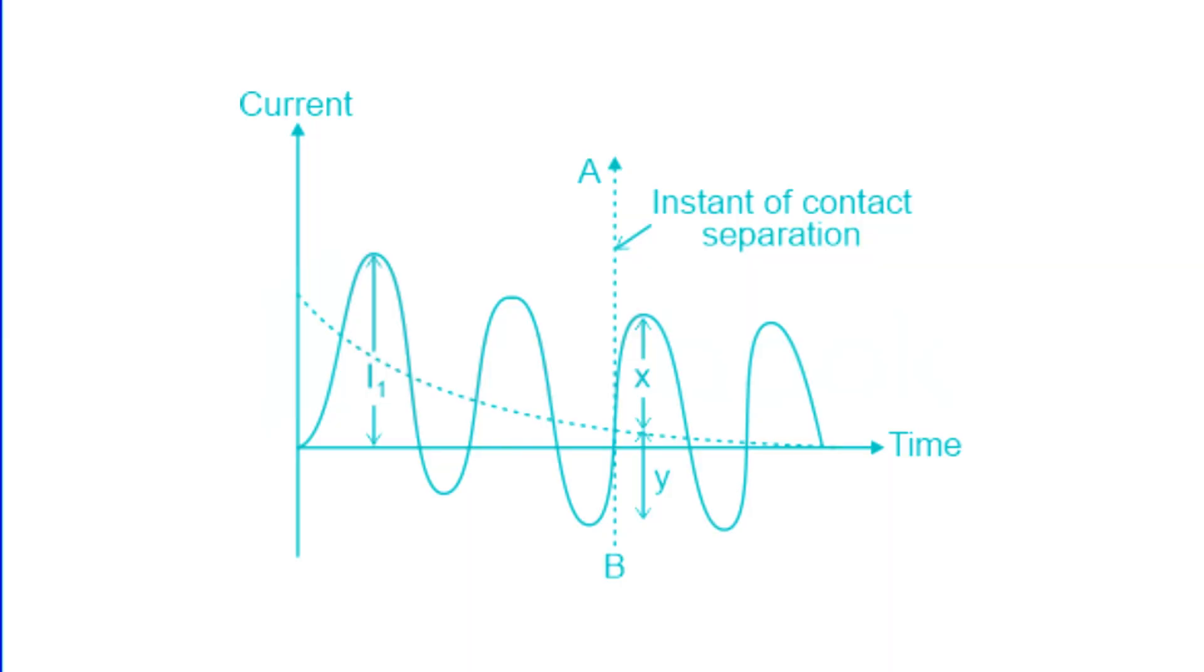The making current of a circuit breaker is the peak value of the maximum current loop during the sub-transient condition, including the DC component when the breaker closes. I one represents the making current of the circuit breaker excluding the DC component.